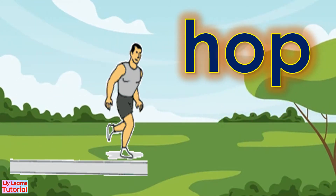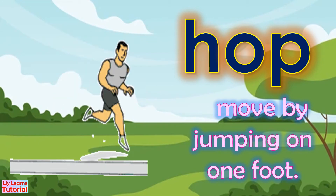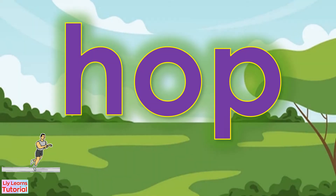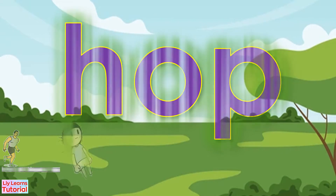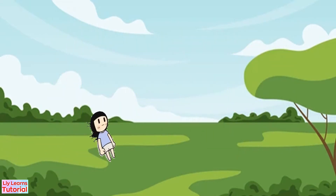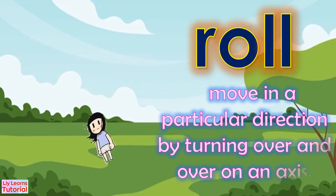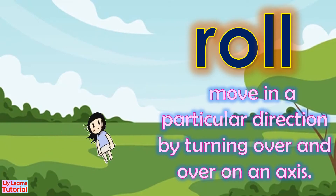Humans hop. It means to move by jumping on one foot. Humans roll — it is to move in a particular direction by turning over and over on an axis.